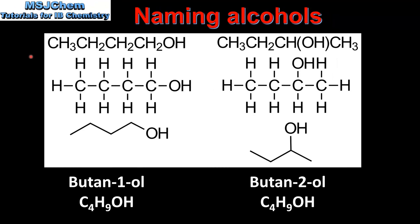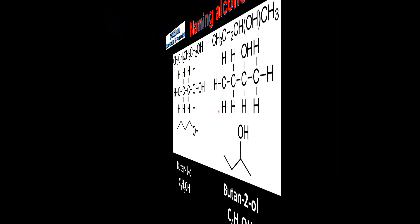Next we look at naming alcohols with four carbon atoms in the longest chain. On the left we have butan-1-ol and on the right we have butan-2-ol. Butan-1-ol and butan-2-ol are structural isomers — they have the same molecular formula but different structural formulas.